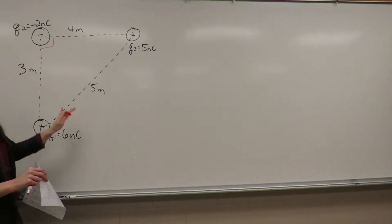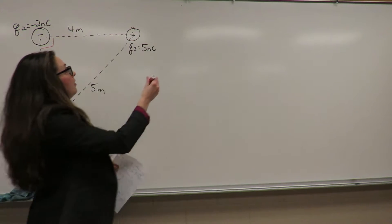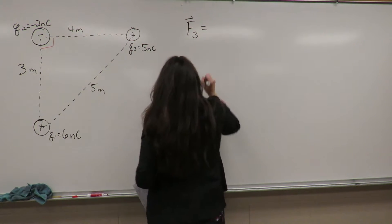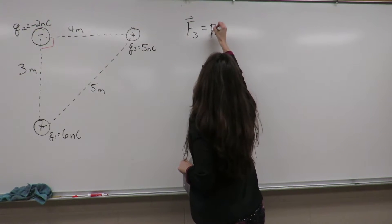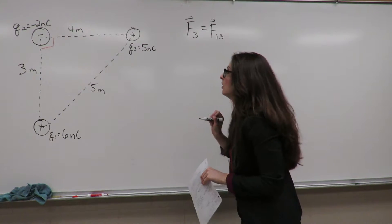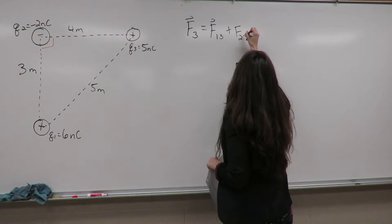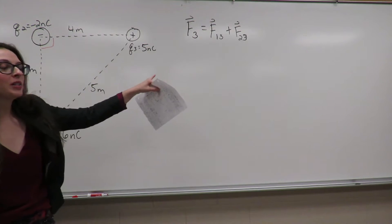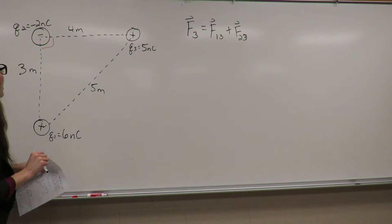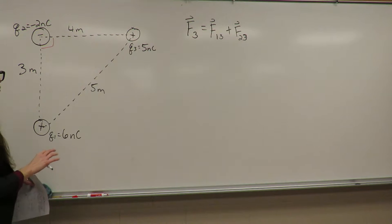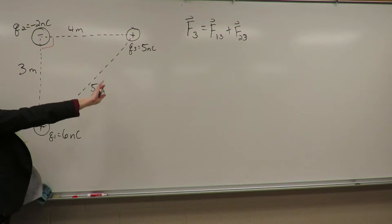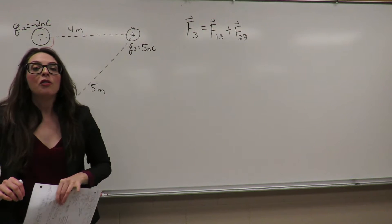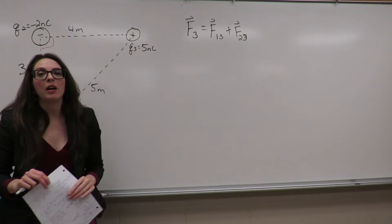The question is: we need to find the resultant force on charge q3 from the other two charges. So we're looking for F3, which equals the sum of the force that charge 1 exerts on charge 3 plus the force that charge 2 exerts on charge 3. Remember that forces are vectors, and in this problem our charges have x and y components.